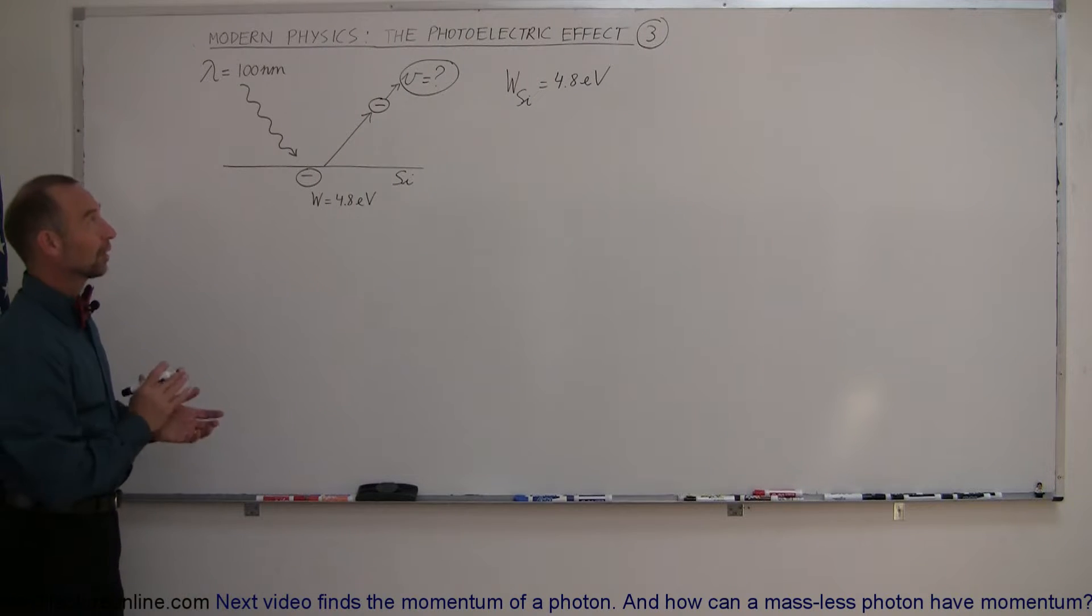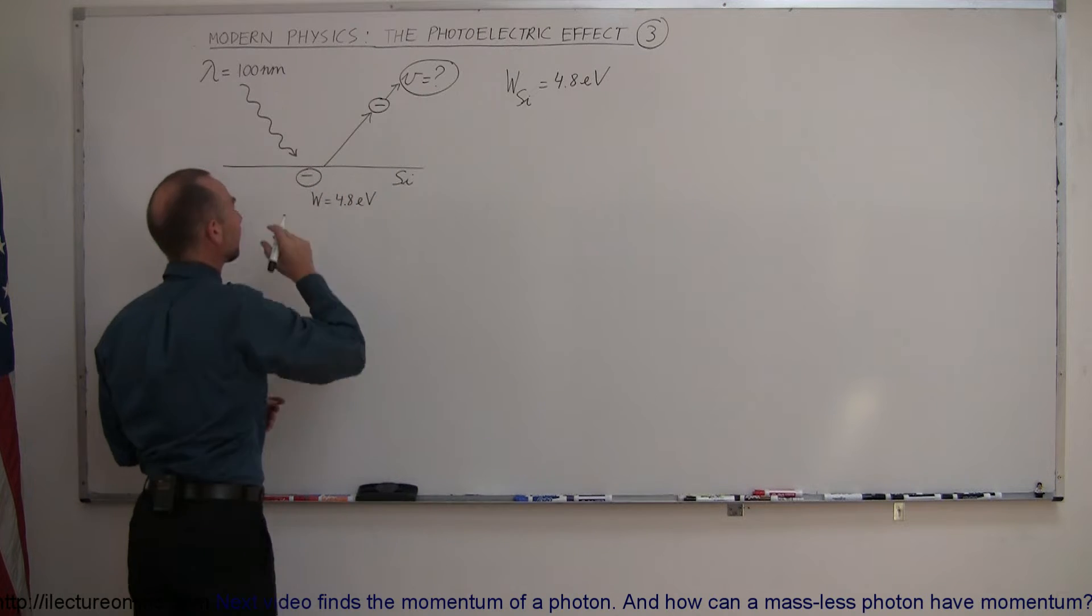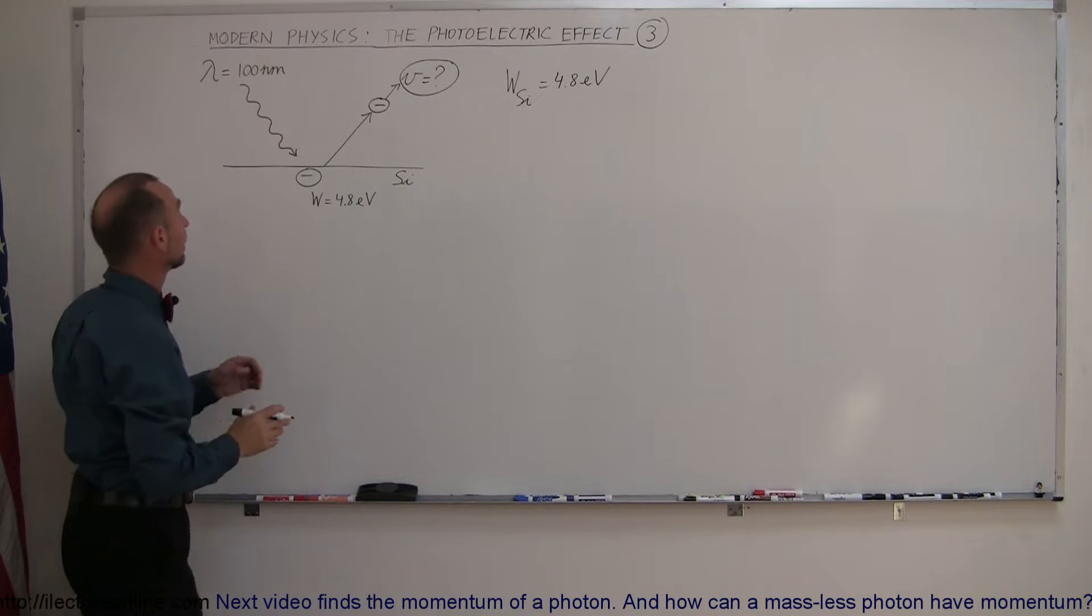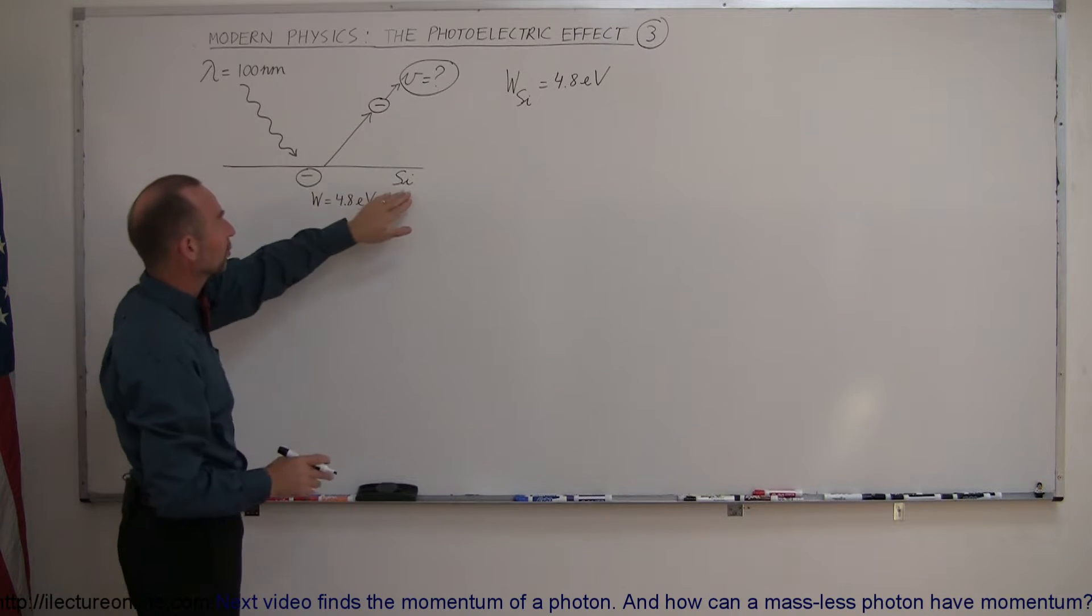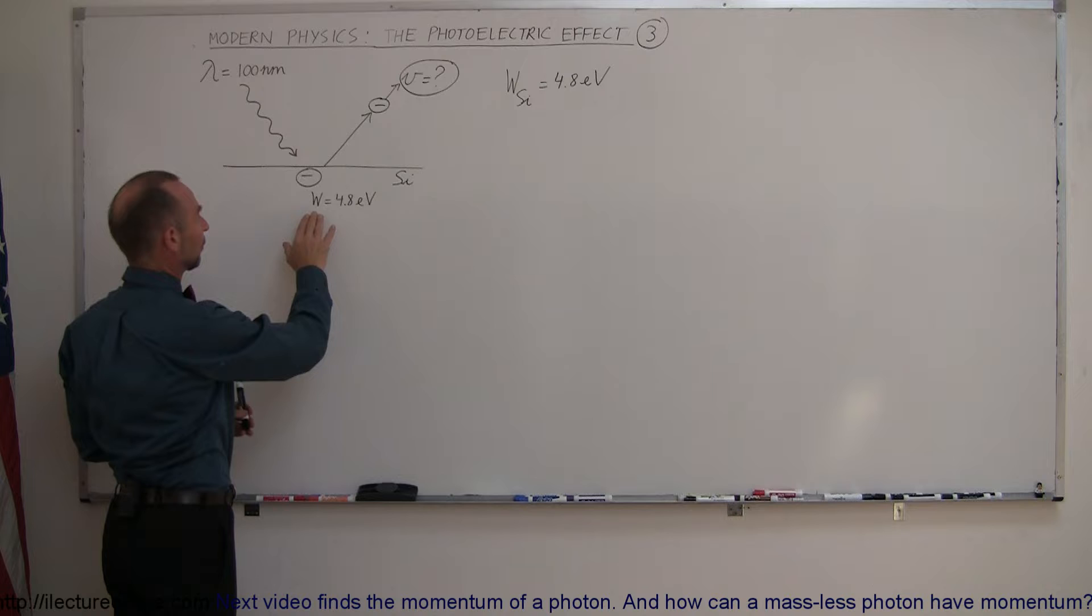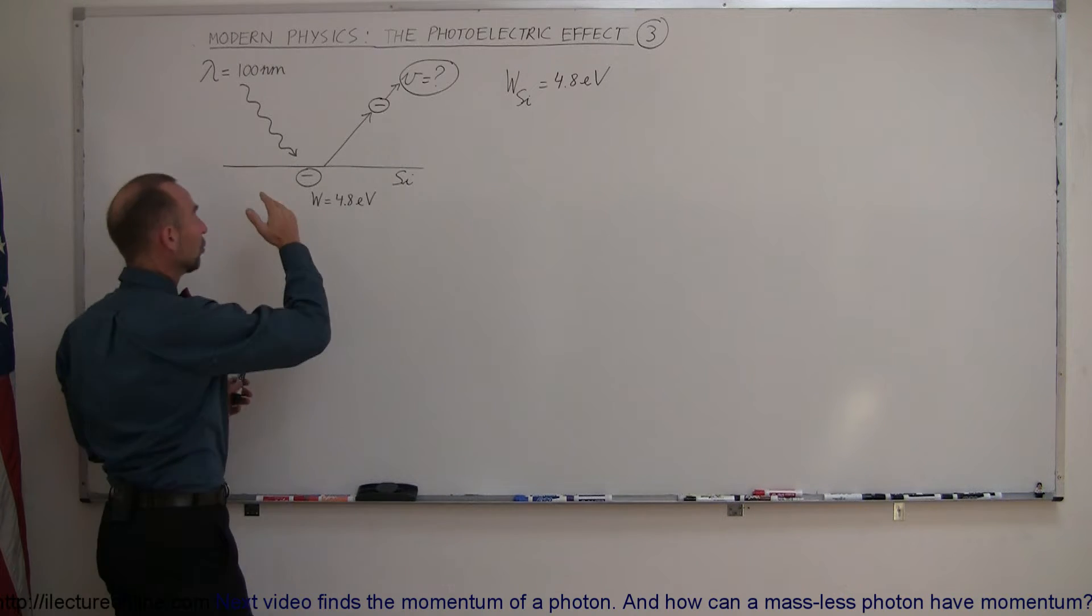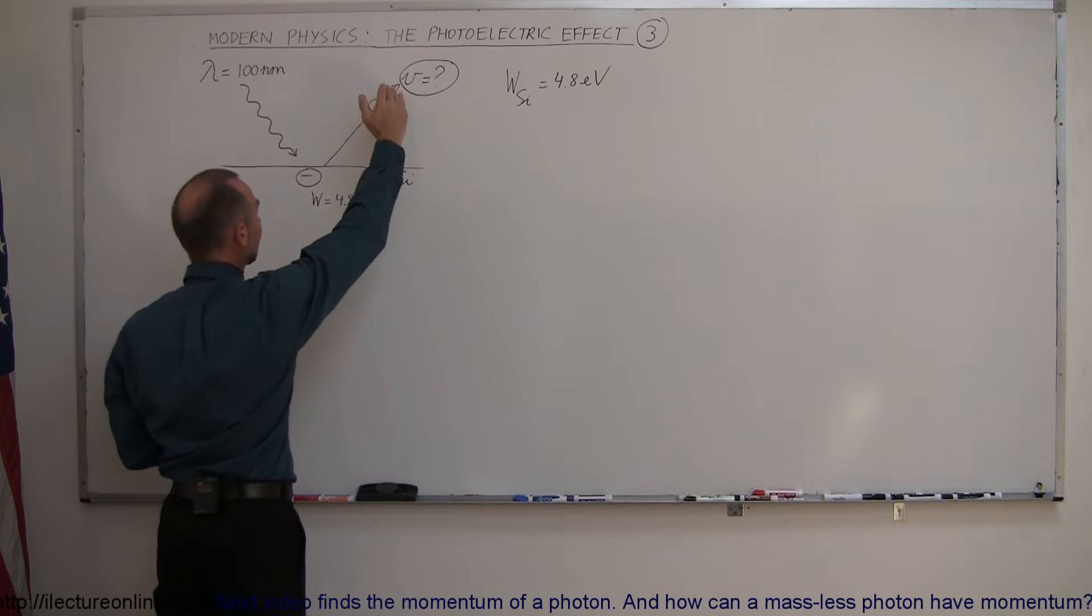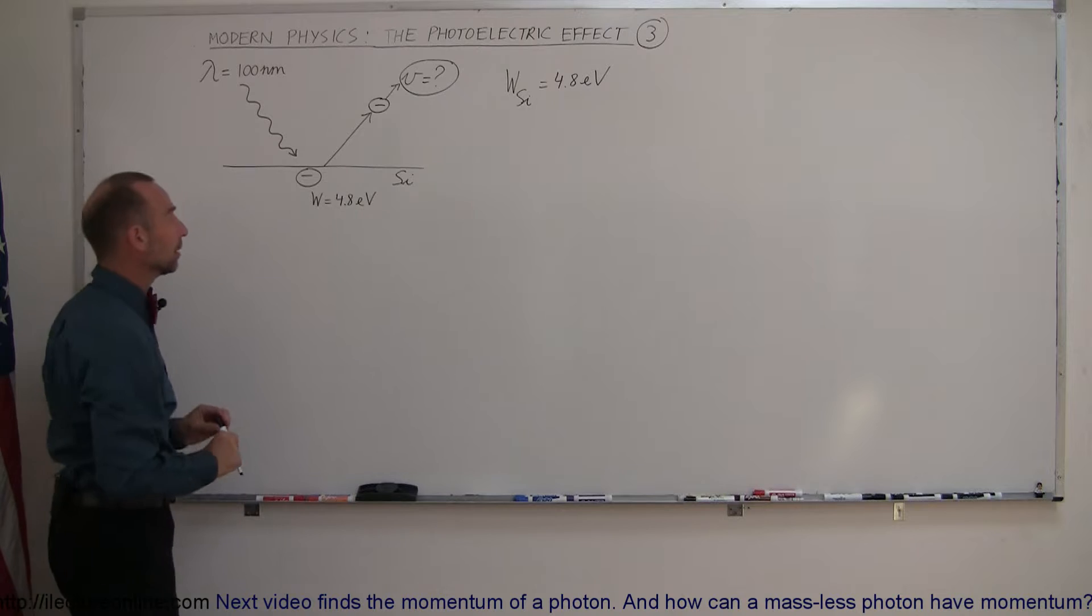Our next example in the photoelectric effect is asking for the eventual velocity of the electron as it's set free by the incoming photon. Again, we're assuming here that the photon contains enough energy to overcome the work function of the metal. In this case, we've chosen silicon, and the work function for silicon is 4.8 electron volts. Assuming it has enough kinetic energy, the electron will zoom away, and so now we're asking for the velocity of the electron as it leaves the metal.